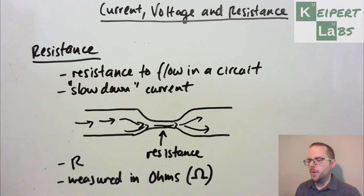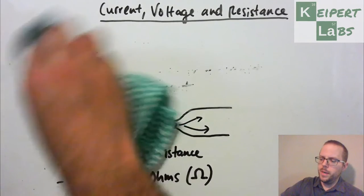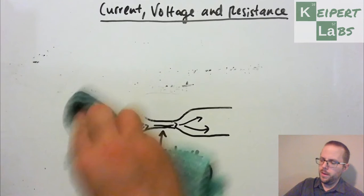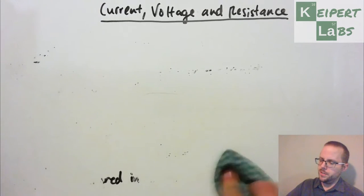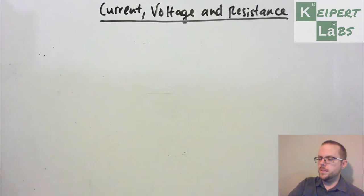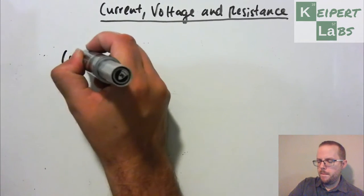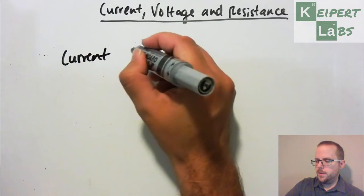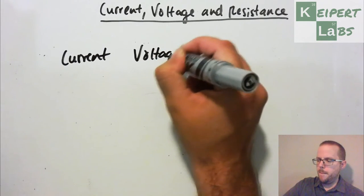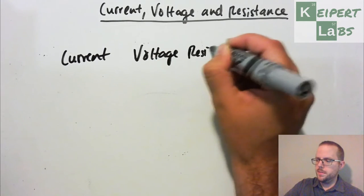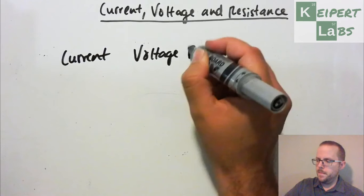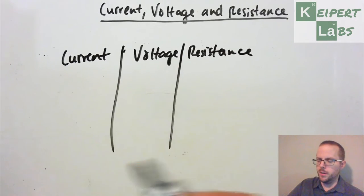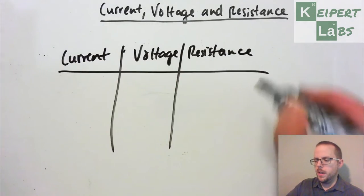So now let's have a very quick kind of go over how these things are measured in a circuit. Current, voltage and resistance. Sorry, my handwriting is deteriorating. I'm just trying to not spend too much of your life on this video.